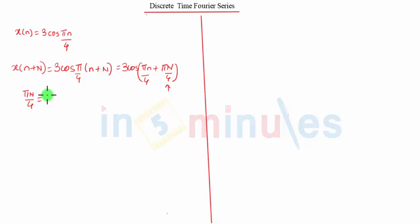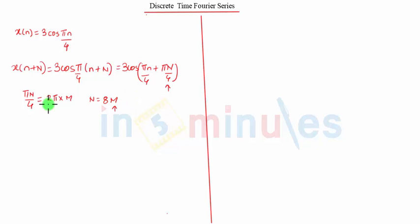So let us consider that πN/4 = 2π·m. If we consider N = 8m, then m should be 1, which gives a period of N = 8. Therefore x(n) is periodic, and as it is a periodic signal, the Fourier series does exist.